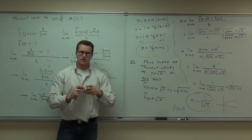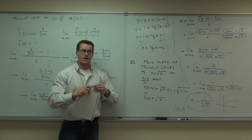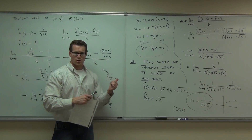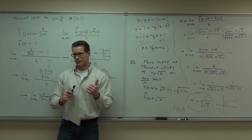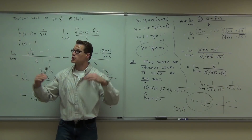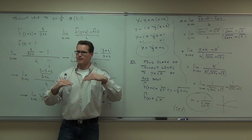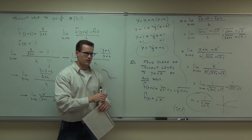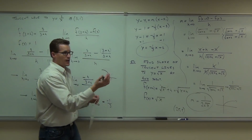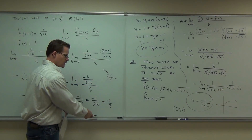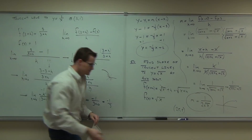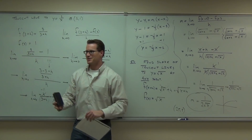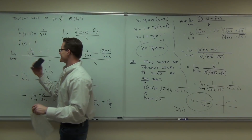So: non-continuous points — limit fails. Sharp points — limit fails because the slopes are not the same from both sides. I'll explain this in much more detail later, but if you have an understanding now, well, that's great. Sneak peek — people love those.